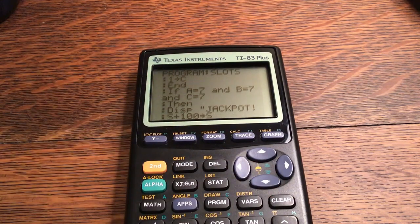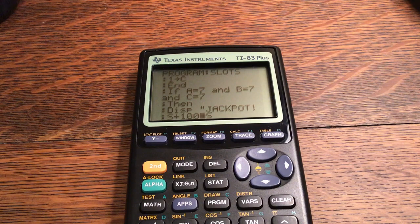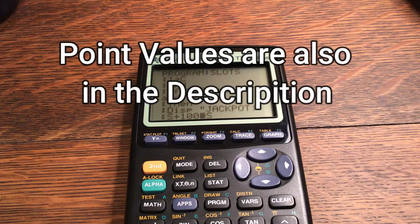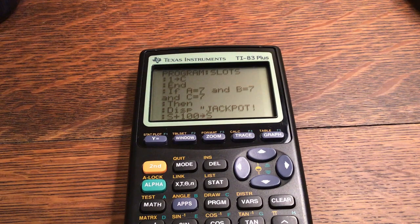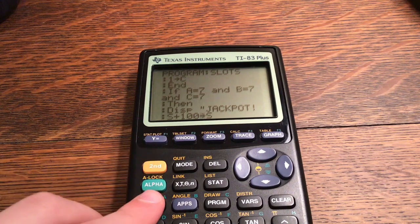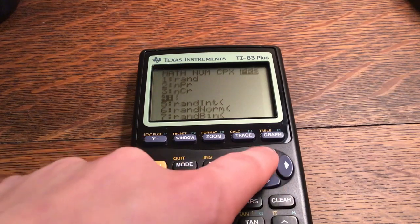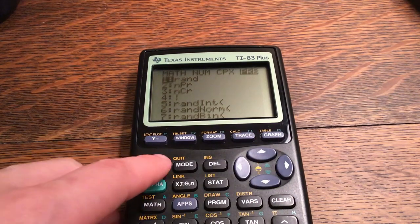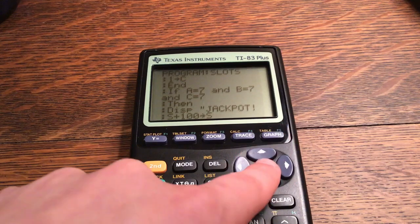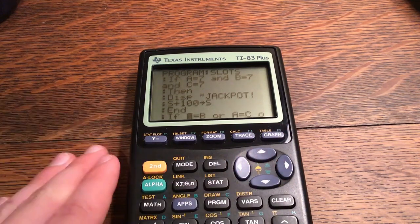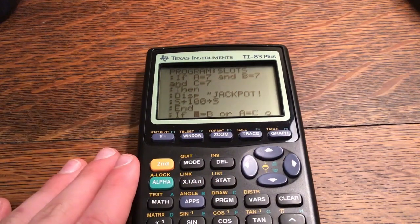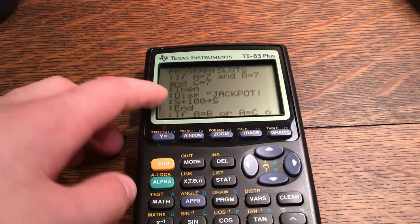So basically this makes it so it recycles the numbers. If A is equal to seven and B is equal to seven and C is equal to seven, then display quote Jackpot exclamation point. Remember to get an exclamation point, you click Math, go over to Probability, so you go one left and you go down to four which is the exclamation point.